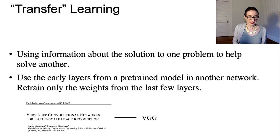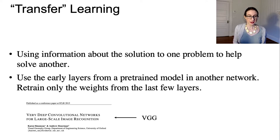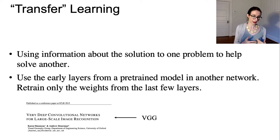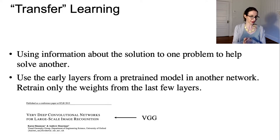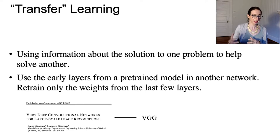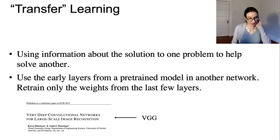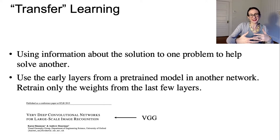Transfer learning is another trick: if you don't have enough data for the particular problem you're working on, you can use a pre-trained network from another problem to help. This uses information about the solution to one problem to help solve another. You use the early layers from a pre-trained model and retrain only the weights from the last few layers. VGG is a common network where people use the first few layers and train the last few layers for their specialized problem.